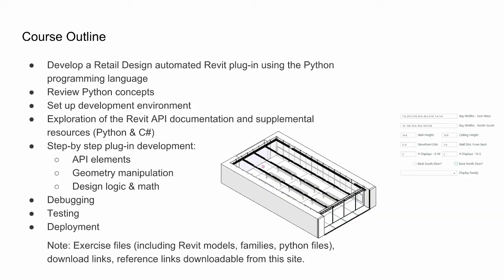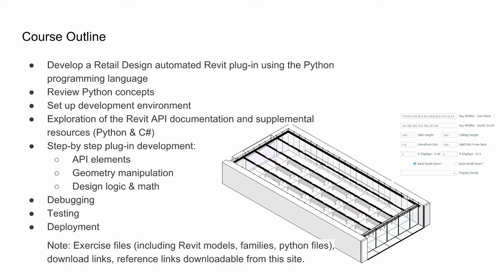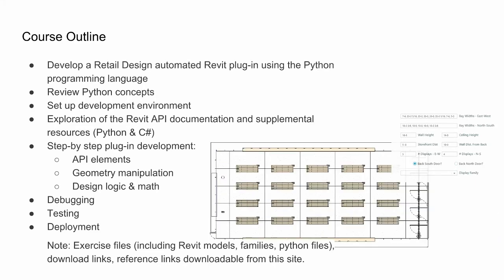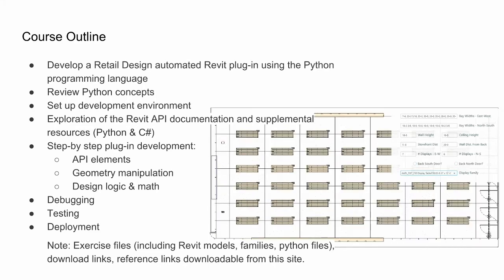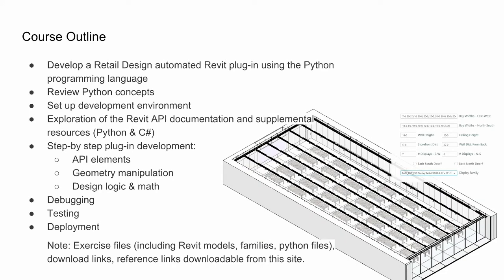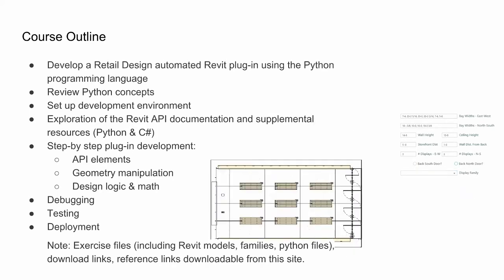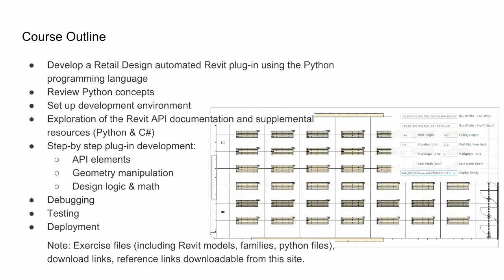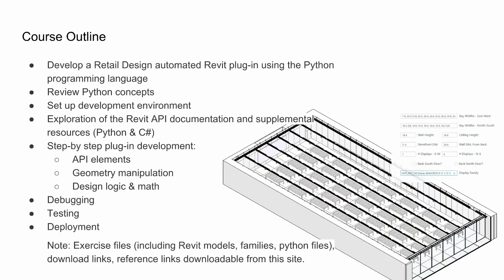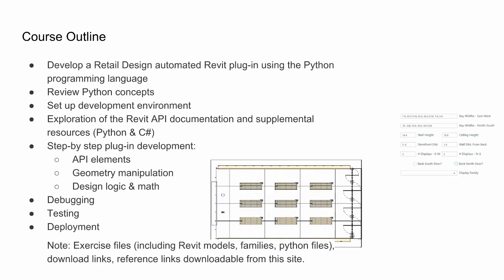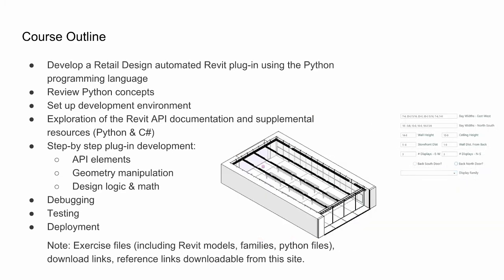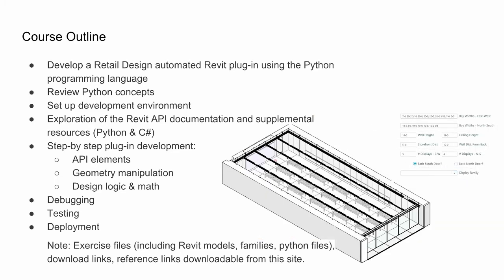We will then walk through the process of developing the retail automation plugin step by step. This part will take up the bulk of the course and includes many API elements, suggests ways to manipulate geometries, and convert design logic using math. Throughout this process and at the end, we will run through ways to debug common errors and test the code.